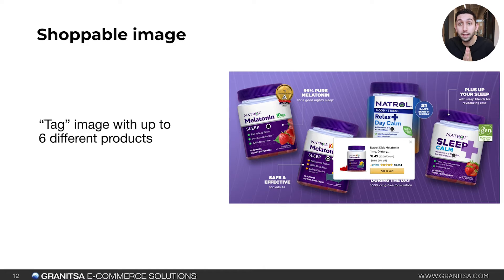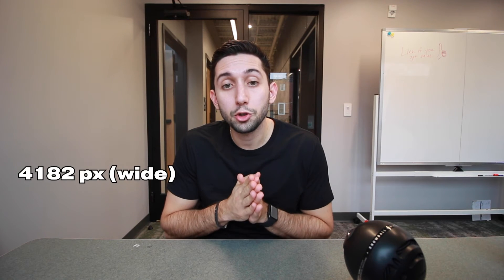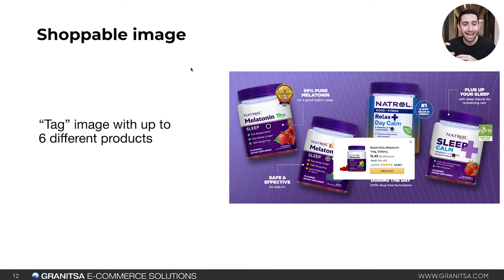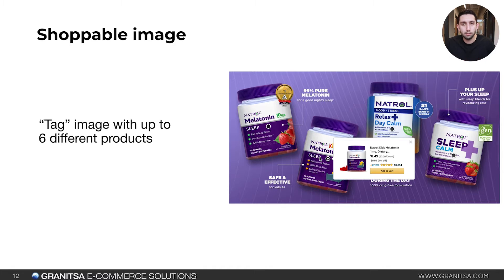The shoppable image does not have a separate desktop and mobile option — it's one singular option. The dimensions are 4,182 pixels wide by 2,037 pixels tall at 300 PPI. Once you upload the image, you can tag up to six different products on it. You can see subtle dots on each product, and hovering over them shows the product details. This is great for lifestyle shots — products on a countertop, in a studio, or people holding the product.